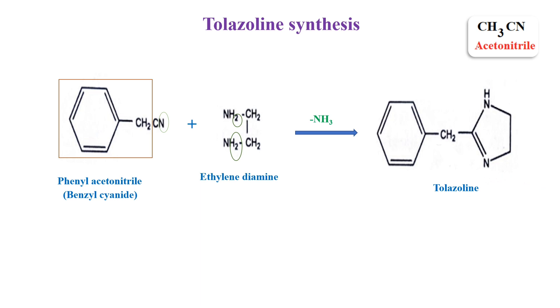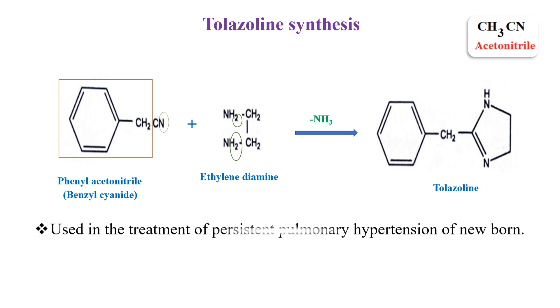Tolazoline is used in the treatment of persistent pulmonary hypertension of a newborn and also in the treatment of Raynaud's disease.